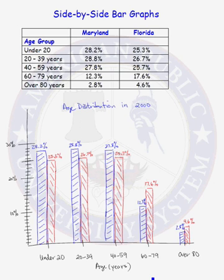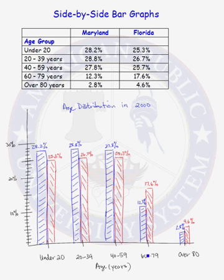From the bar graph, we see that 28.2% of all Maryland residents are under 20, 28.8% are between 20 and 39, 27.8% are between 40 and 59, 12.3% are between 60 and 79, and 2.8% of Maryland residents are over 80.